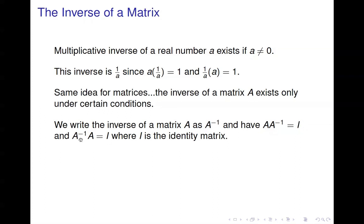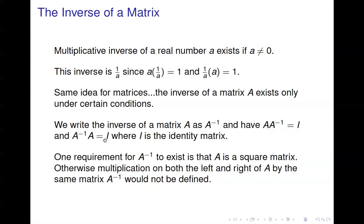Also, A inverse times A is the identity matrix. One of the requirements for A inverse to exist is that A is a square matrix, and you have to have that so that you can multiply on the left and on the right by the same matrix.